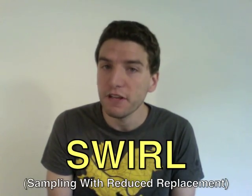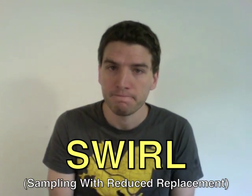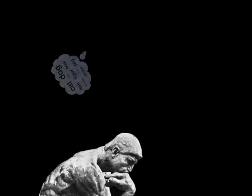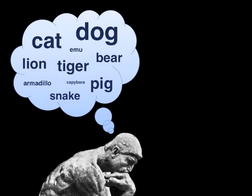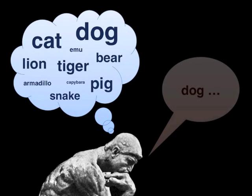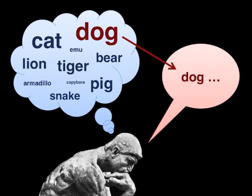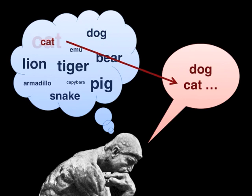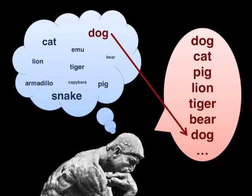Now we've come up with a new computational cognitive model of the human list generation process that captures both of these properties. We call it SWIRL, for Sampling With Reduced Replacement. Imagine items have a hypothetical size in your mental lexicon. Since order matters, the probability of listing an item is related to its size. Once it's listed though, the size is reduced, making it less likely but still possible to be repeated.